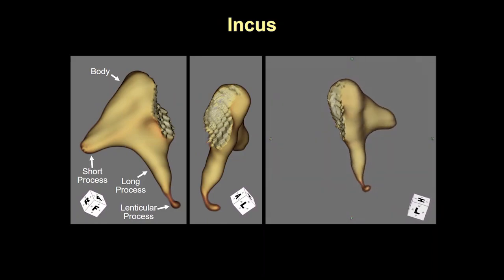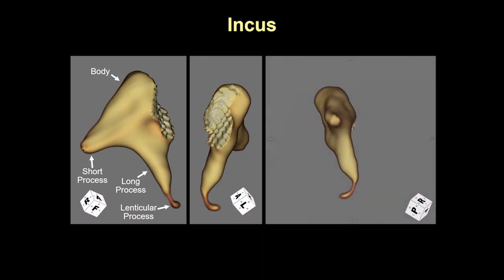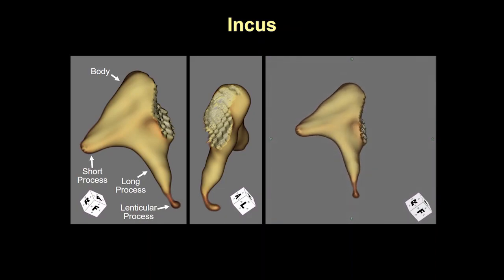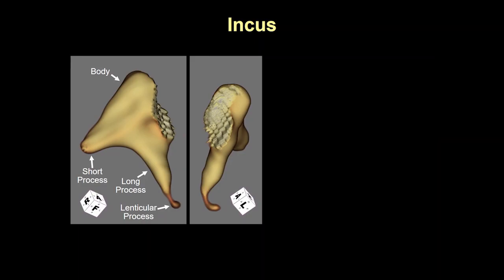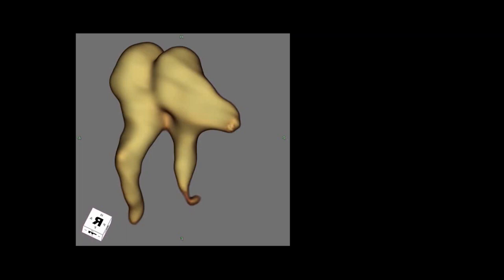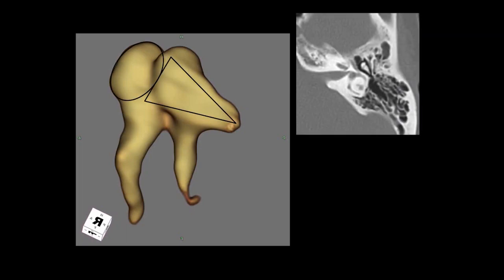The incus is shaped like a premolar tooth. The body demonstrates a facet anteriorly to articulate with the head of the malleus, a short process which points posterior to the aditus and antrum, and the long process which is directed medially and terminates as the lenticular process. The malleus and incus form a diarthrodial joint as shown here.